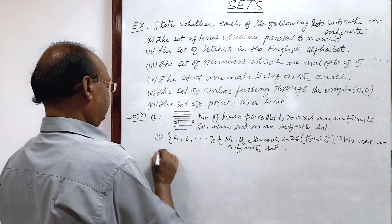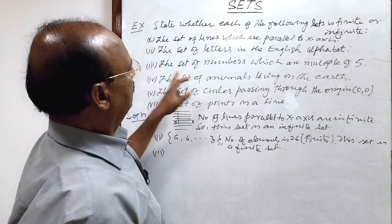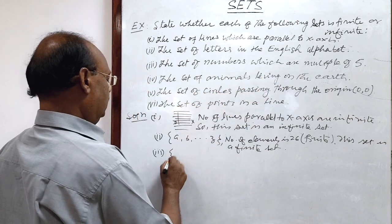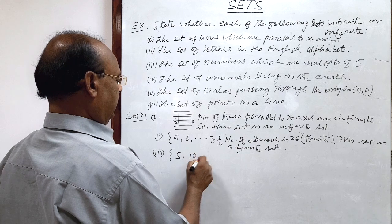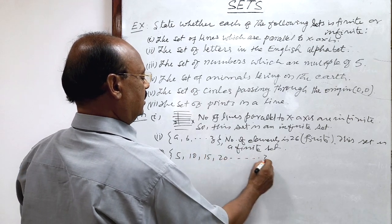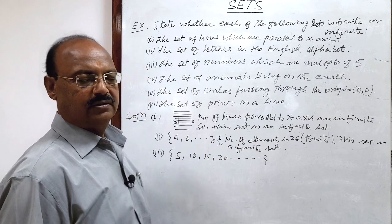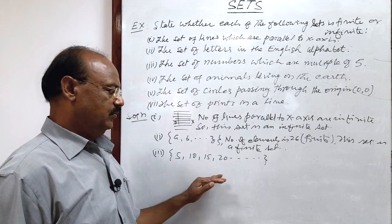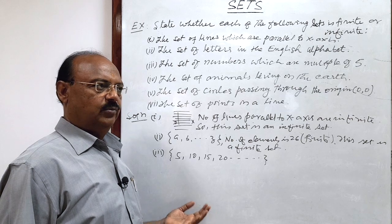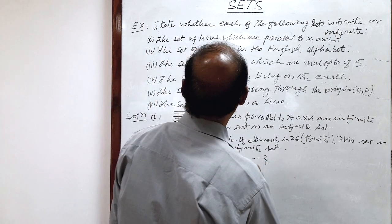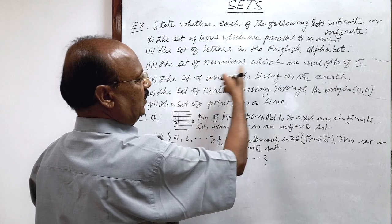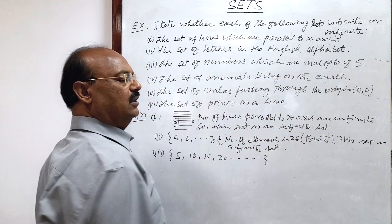Third question: the set of numbers which are multiples of 5. Numbers like 5, 10, 15, 20 — there are infinite numbers which are multiples of 5. So this set is an infinite set, because numbers which are multiples of 5 are infinite.